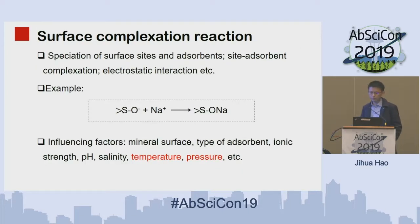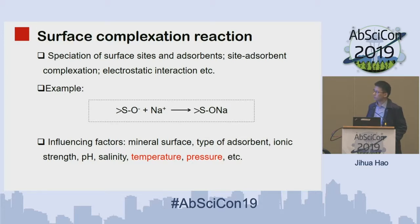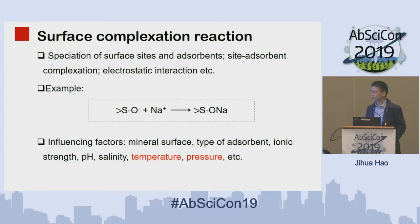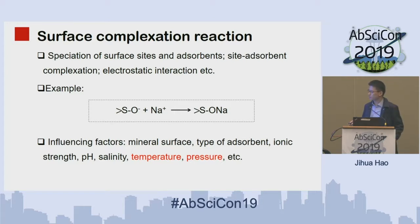The surface complexation reaction involves several important processes, including the speciation of surface sites and adsorbents, the site-adsorbent complexation reaction, and electrostatic interaction. All these processes are affected by many factors including the type of mineral surface, type of adsorbent, ionic strength, pH, salinity, temperature, and pressure. Among these factors, all except temperature and pressure are studied again and again, but temperature and pressure are not yet well understood.